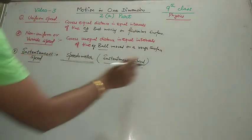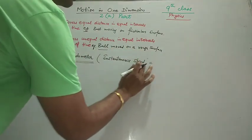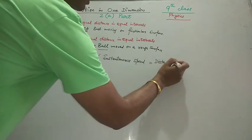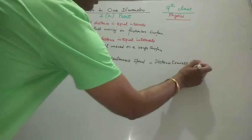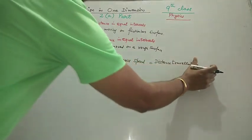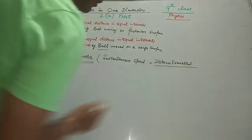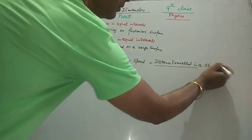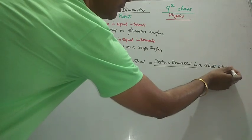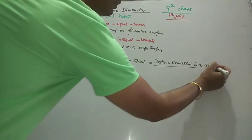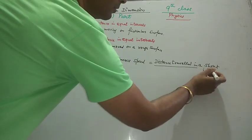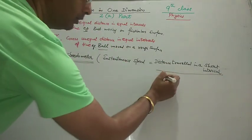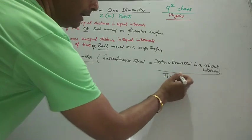The formula for instantaneous speed is: instantaneous speed equals the distance travelled by the body in a short interval, divided by that time interval.